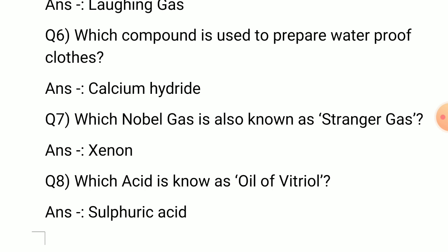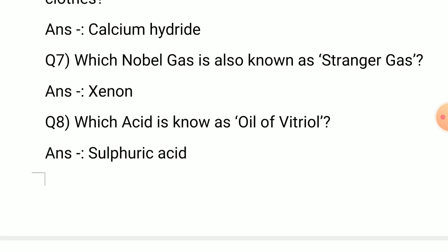Question number 7: Which noble gas is also known as stranger gas? Answer: Xenon. Question number 8: Which acid is known as oil of vitriol? Answer: Sulfuric acid.